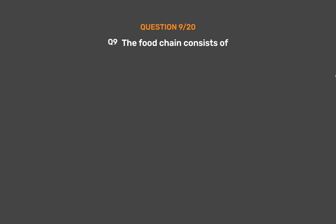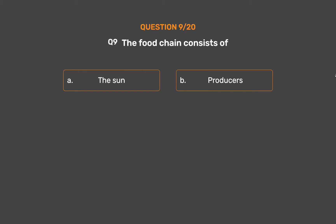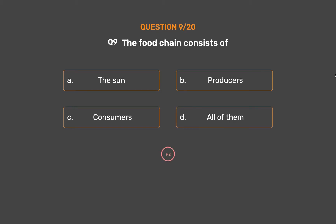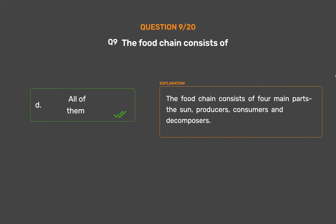Question number 9: The food chain consists of — Option A: The sun, Option B: Producers, Option C: Consumers, Option D: All of them. The correct answer is Option D, All of them. The food chain consists of four main parts: the sun, producers, consumers, and decomposers.